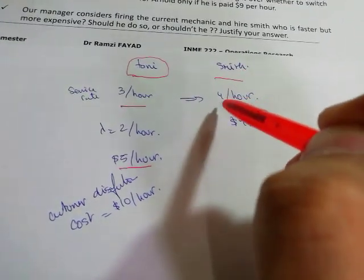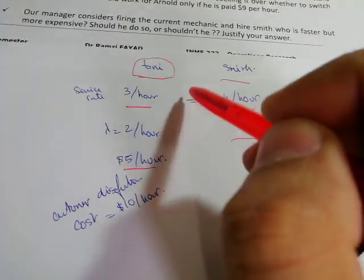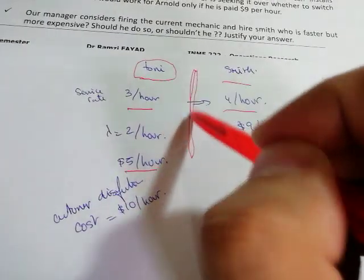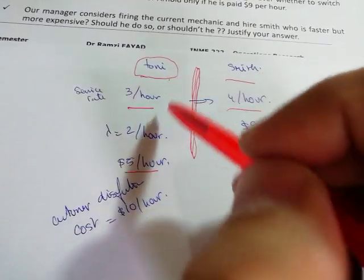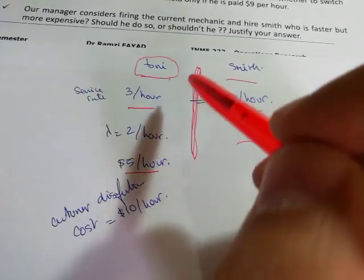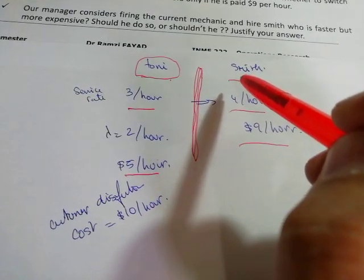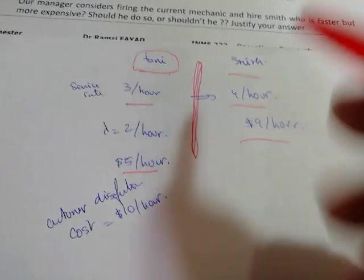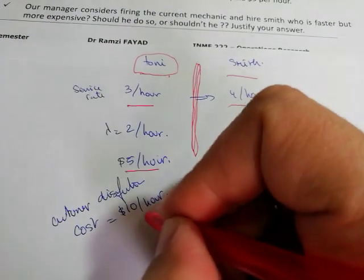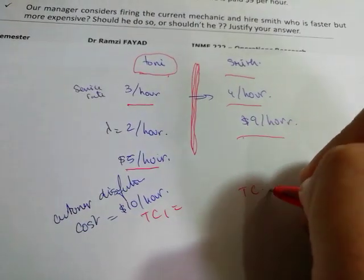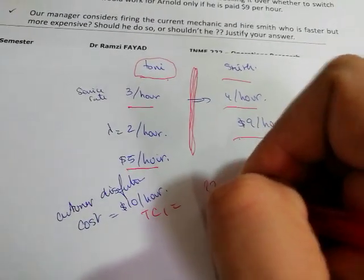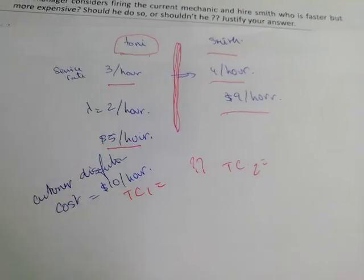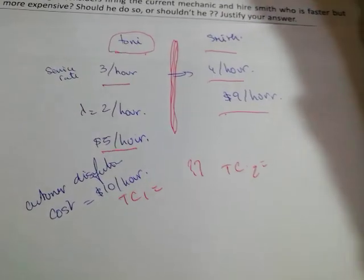The question is: would we keep Tony, who is slow but less expensive, or replace him with Smith, who is fast but more expensive? We need to study the total cost for each option and compare them to see which one is more convenient for us.